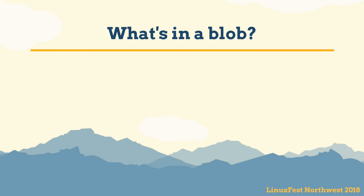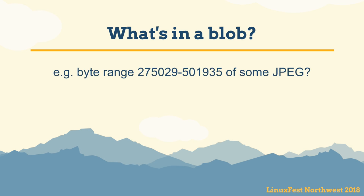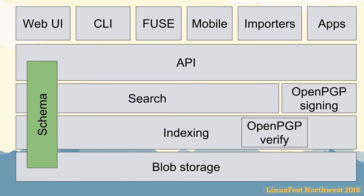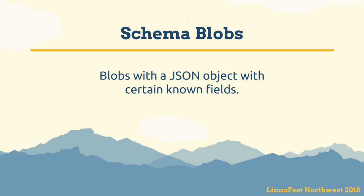What is actually in a blob? You can put anything you want in a blob — like a middle chunk of a JPEG, which is probably what most of my 6.6 million blobs are. However, some blobs are special to Perkeep. We call this the Perkeep schema: blobs formatted as JSON objects with a bunch of well-defined fields by convention. You might ask — why JSON and not a binary format?